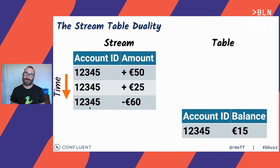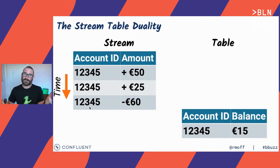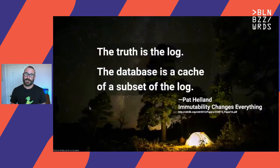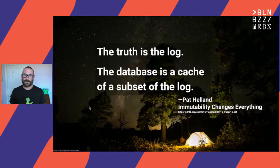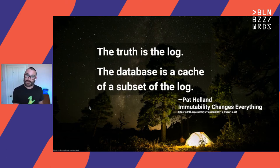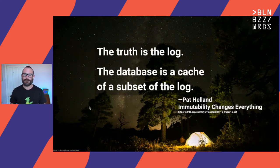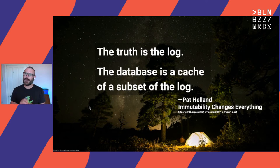This is called the stream-table duality — a duality because it goes both ways. We can take tables from existing databases, capture the changes to give us a stream of events, and from a stream of events we can roll through to a state — a table — at any time. This gives rise to the great quotation from Pat Helland: 'The truth is the log. The database is a cache of a subset of the log.' The fundamental pieces you need are the events. With events you can build a database table if you want to, but you don't have to.